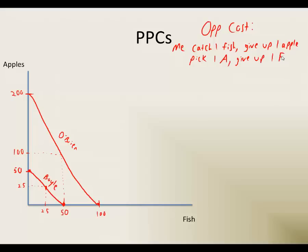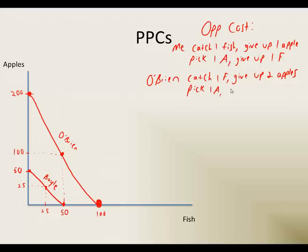Hopefully you can see why that happens. Bill, on the other hand — if he wants to catch one fish, he has to actually give up two apples. We can see that by moving between either end of his PPF, or comparing both intercepts. If he wants to catch 100 fish, he has to give up 200 apples. So for every fish he catches, he's giving up two apples. And if he wants to pick one apple, he has to give up one half of a fish.